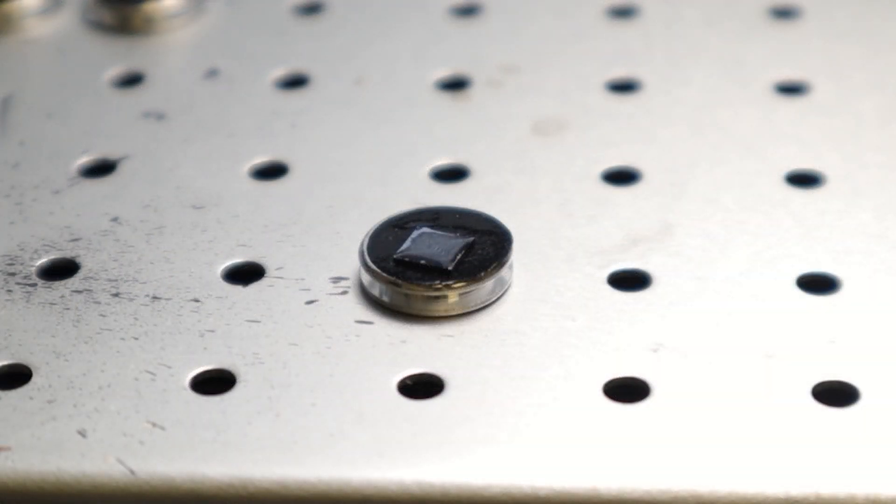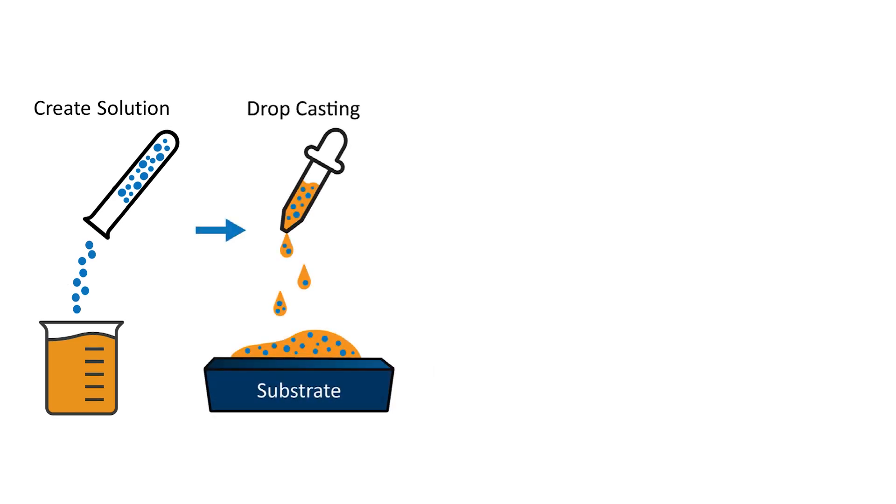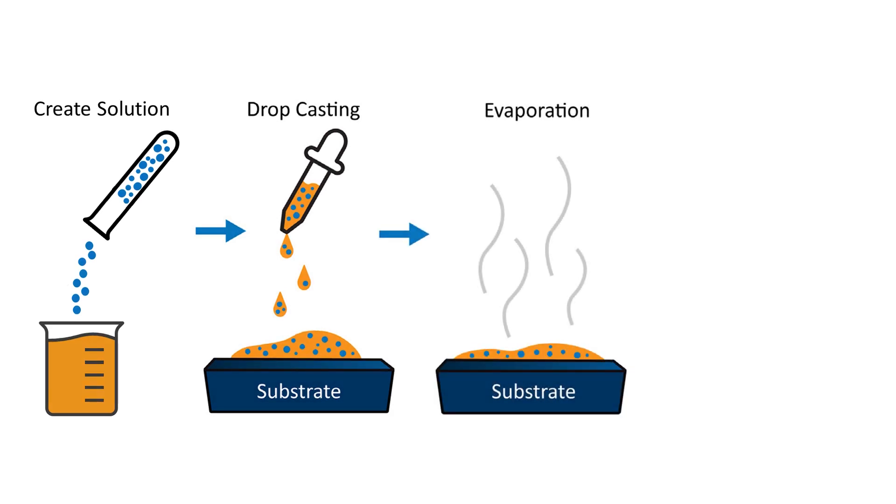The final method I'll be demonstrating is called drop casting, which is used for particles that are less than a micron in diameter. This technique involves mixing a powder into a solvent, most commonly isopropyl alcohol or ethanol, and then casting said solution onto a substrate. The solvent will then evaporate and leave the powder behind, creating a uniform distribution of particles.